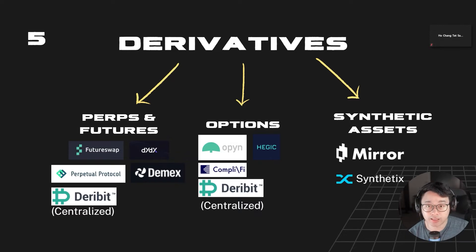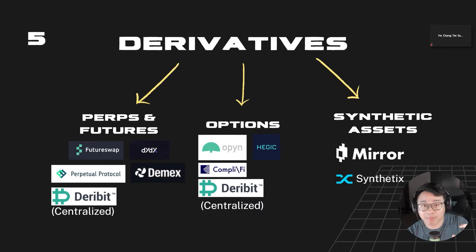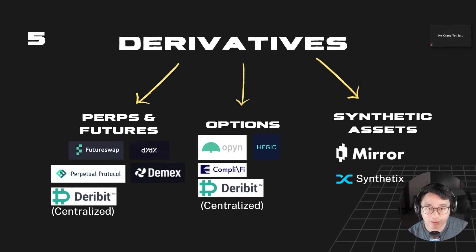Perpetuals last forever and your position never has an expiry date, unlike futures or options. They do have a small funding rate — if it's positive, more people are longing, and to keep the perpetual price close to the underlying spot price, the positive funding rate incentivizes shorts to come in and receive that funding. Popular perp platforms include Futureswap, dYdX, and Perpetual Protocol. Note that perps allow leverage, but leverage is a dangerous tool and I wouldn't recommend it unless you're a professional.